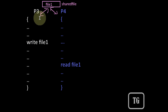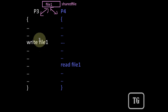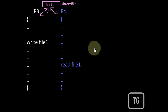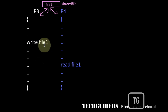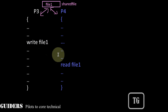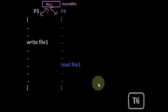Consider this example. Process P3 performs a write operation on a shared file named file1, and P4 should read from the same file only after P3 has written. If P4 tries to read the file before P3 writes, it will read invalid data. The order of execution is important — P3 must perform the write operation first, then P4 reads. Both processes should never perform these operations at the same time, as it leads to something like race condition. Hence P3 and P4 must be properly synchronized.